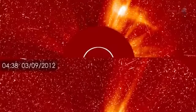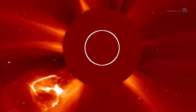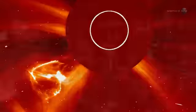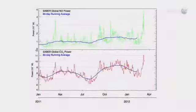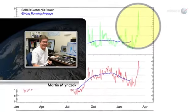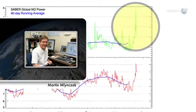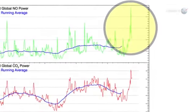NASA-funded researchers say a flurry of solar storms from March 8th to 10th dumped enough energy in Earth's upper atmosphere to power every residence in New York City for two years. This was the biggest dose of heat we've received from a solar storm since 2005, says Martin Malintchak of NASA Langley Research Center. It was a big event and shows how solar activity can directly affect our planet.